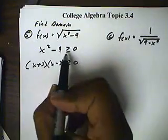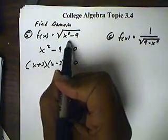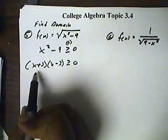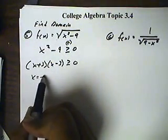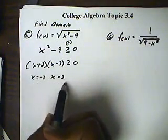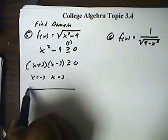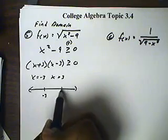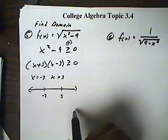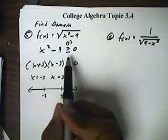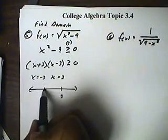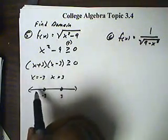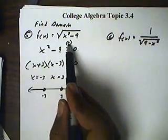Now, before we get started, because this is greater than or equal to, we're looking for positive portions. So when I solve this, I get x equals negative 3 and x equals positive 3. On the number line, this is negative 3 and this is positive 3. Furthermore, since this is equal, these will be solid points. Now I need to figure out which of these three sections are going to be positive.